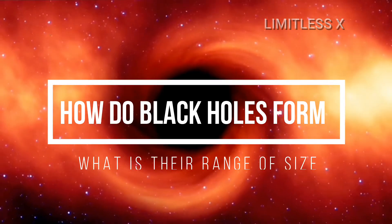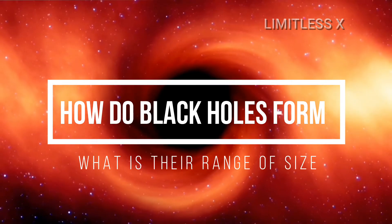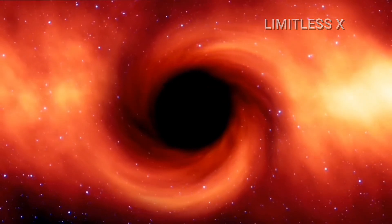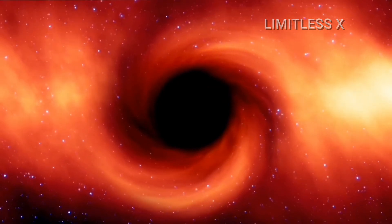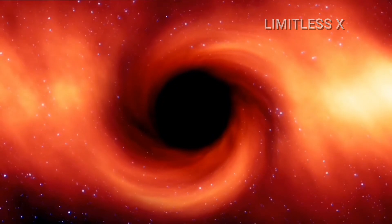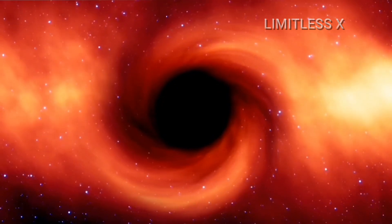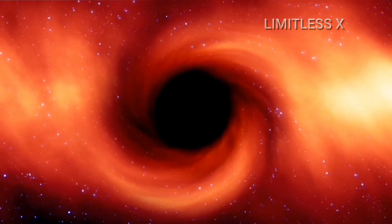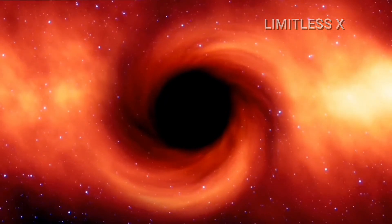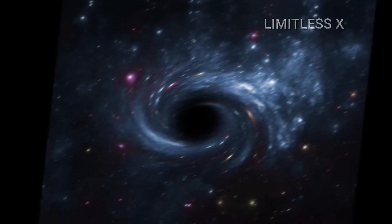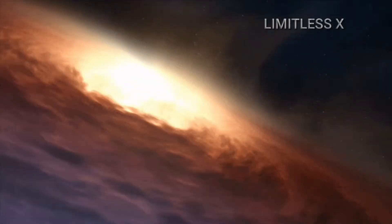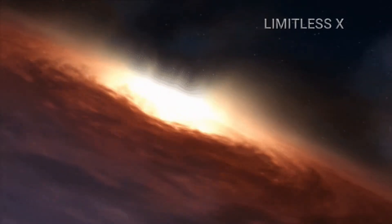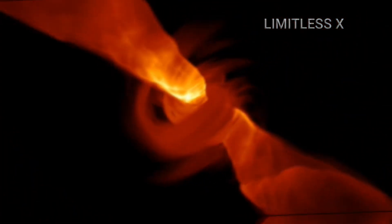How do black holes form and what is their range of size? While most scientists argue that the first black holes emerged when the universe initially started expanding, it's the stellar black holes that are formed when the core of an extremely big star collapses on itself. Supermassive black holes are thought to have come into existence at the very same time as the galaxies they are part of. The one thing that is common to most if not all black holes is the path they take after the parent star has died.